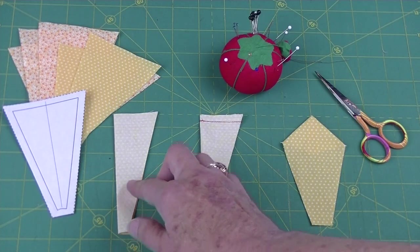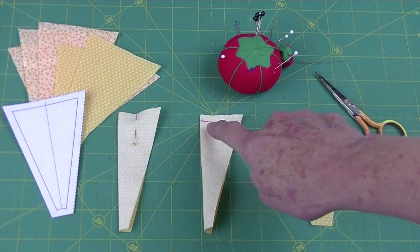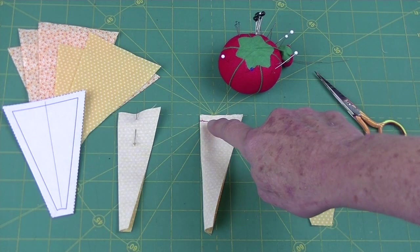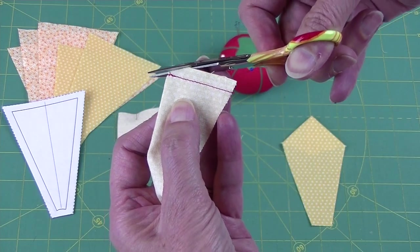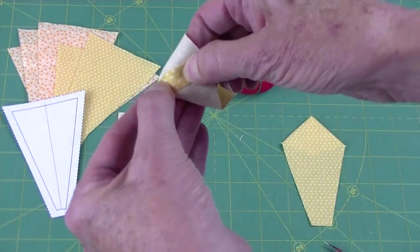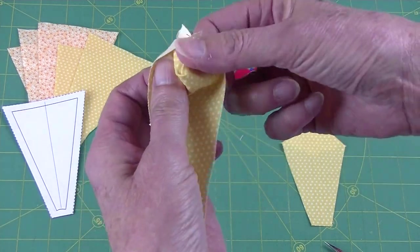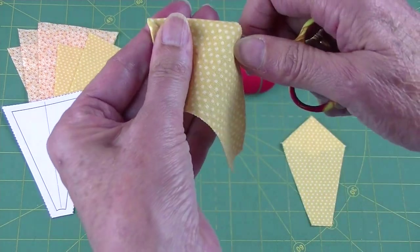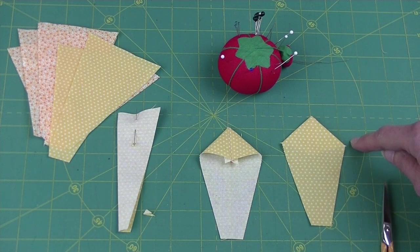Fold the wedge in half with right sides together and then pin. Sew a quarter inch seam along this edge. Back stitch by the fold to lock your stitches. Trim this corner and then finger press this seam open. Turn it inside out. You might want to use your scissors to help pop that point out. Line up that seam with the center of your wedge and then press.